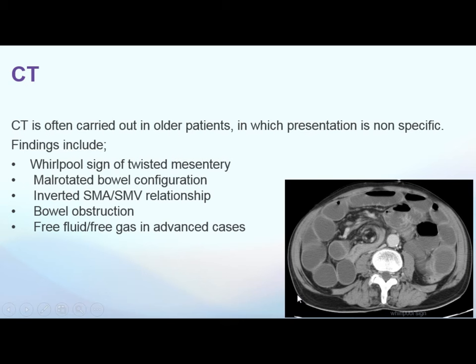On CT — performed in older patients since midgut volvulus is more common in pediatrics — we are not as concerned about ionizing radiation. The CT signs include the whirlpool sign as seen on ultrasound, a more rotated bowel configuration, dilated bowel indicating bowel obstruction, and reversed relationship of the superior mesenteric artery and superior mesenteric vein. Free fluid and free gas are seen in advanced cases.